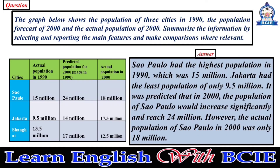Sao Paulo had the highest population in 1990, which was 15 million. Jakarta had the least population of only 9.5 million. It was predicted that in 2000, the population of Sao Paulo would increase significantly and reach 24 million. However, the actual population of Sao Paulo in 2000 was only 18 million.